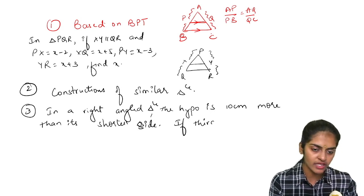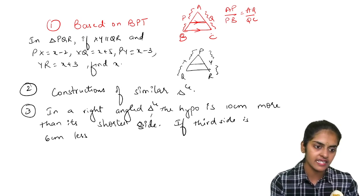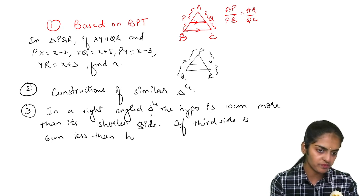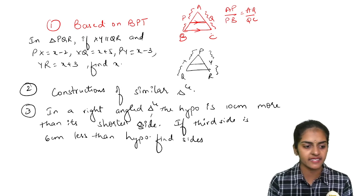If the third side is 6 centimeter less than hypotenuse, so find the sides of the right angle triangle.